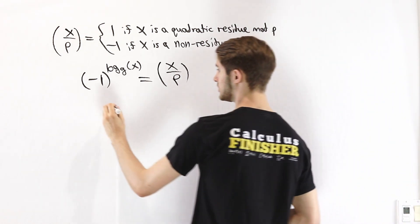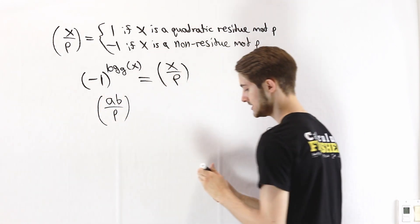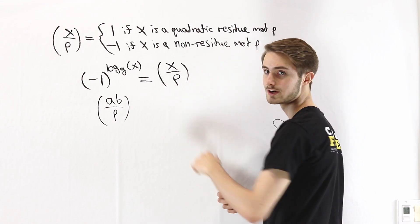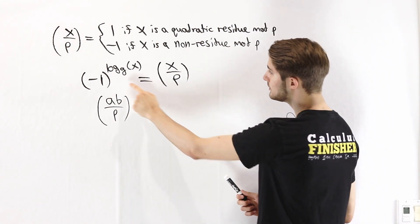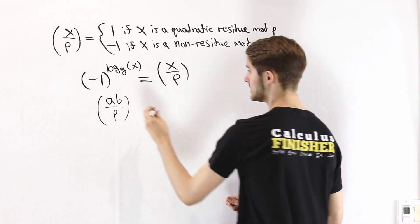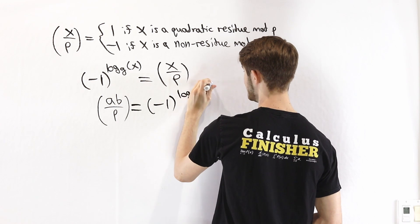Now from here we're going to look at the following expression: what's the Legendre symbol (ab/p)? So we're multiplying two numbers up here. We want to see if it's a quadratic residue. Well we can rewrite it using this equation that we have right here. This is equal to (-1) to the power of log base g of ab.